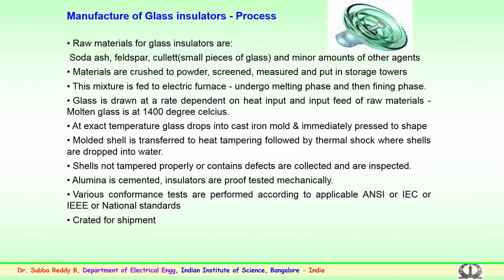The mixture available in the storage towers is fed to the electric furnace, where it undergoes a melting phase and then a fining phase. The glass is at the molten stage at around 1400 degrees Celsius and can be drawn at a known rate depending upon the heat input and the input feed of the raw materials.